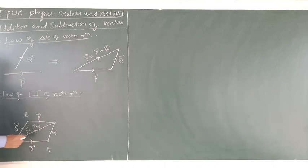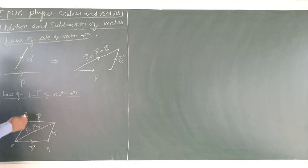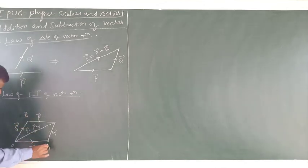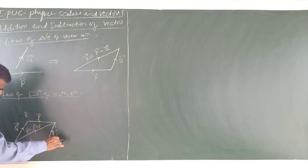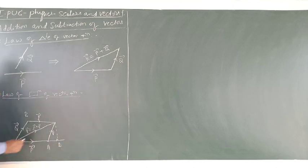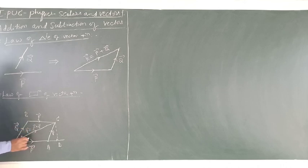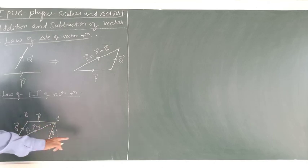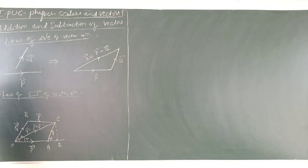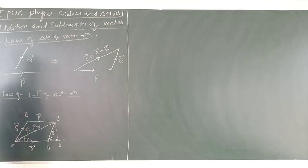Now let us find the resultant of these two vectors. Vector P is represented by OA and vector Q is represented by OB. I will produce this line and drop a perpendicular from this point, calling it D, and label this point C. I will call the angle between the two vectors as theta, and the angle between the resultant and P as alpha. Since these two are parallel lines cut by a transversal, they are corresponding angles, so this angle is also theta. Now we shall derive an expression to find the magnitude and direction of the resultant of two vectors.